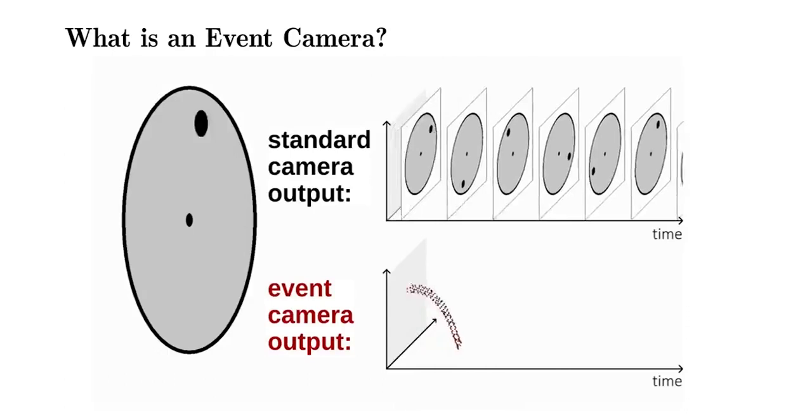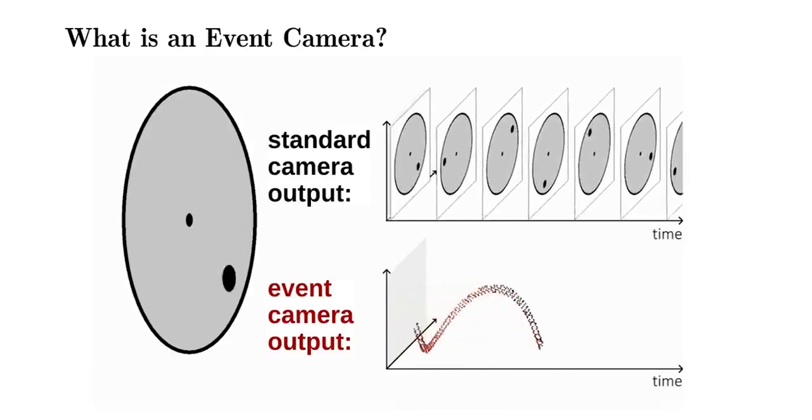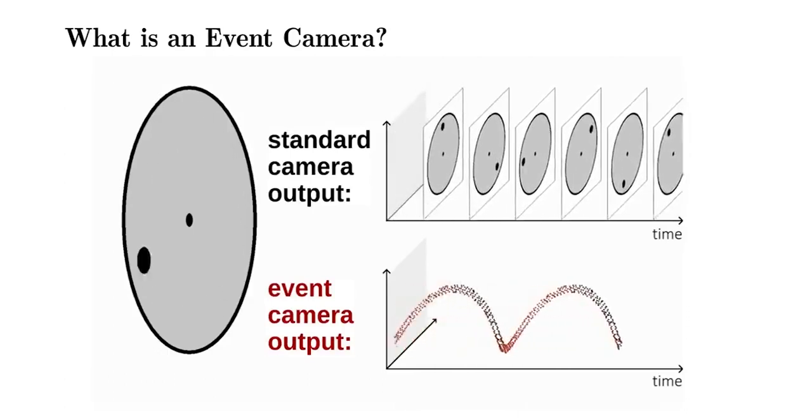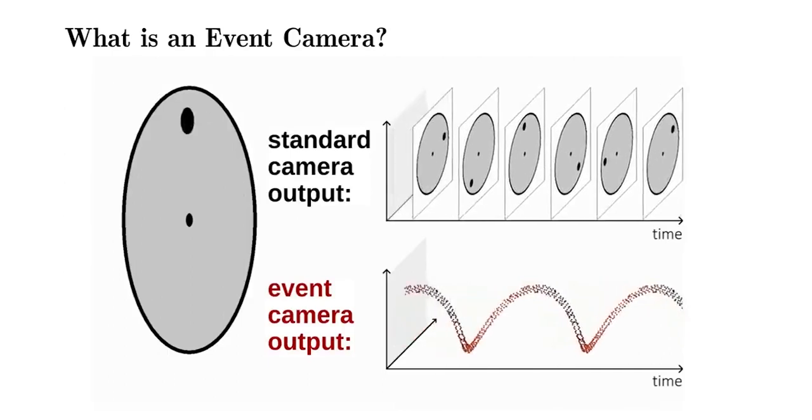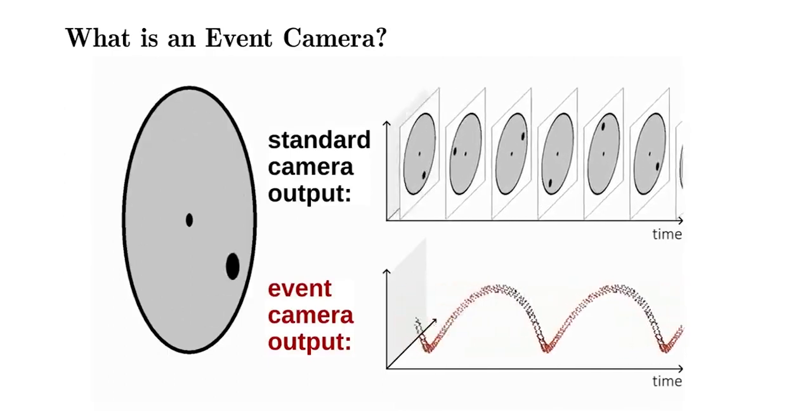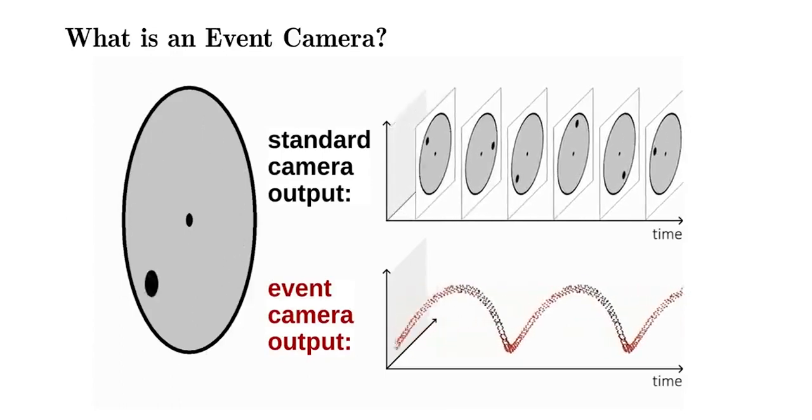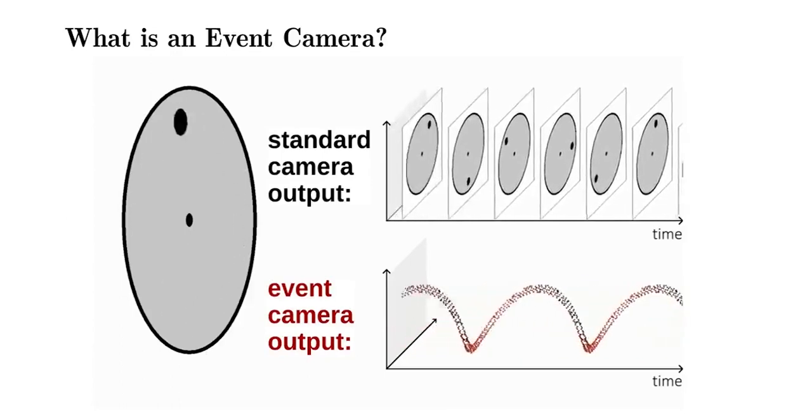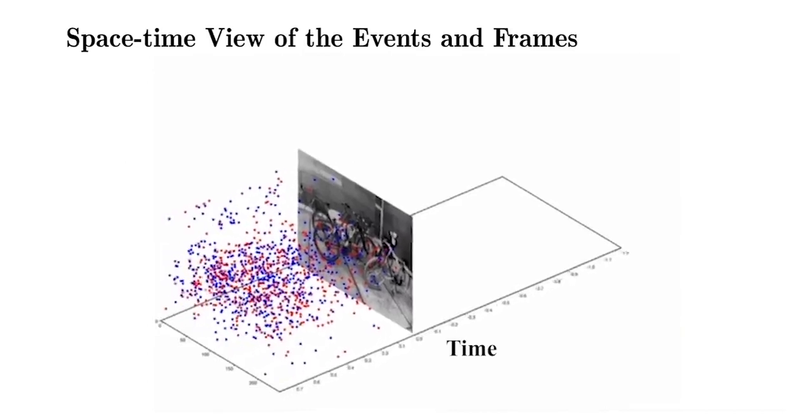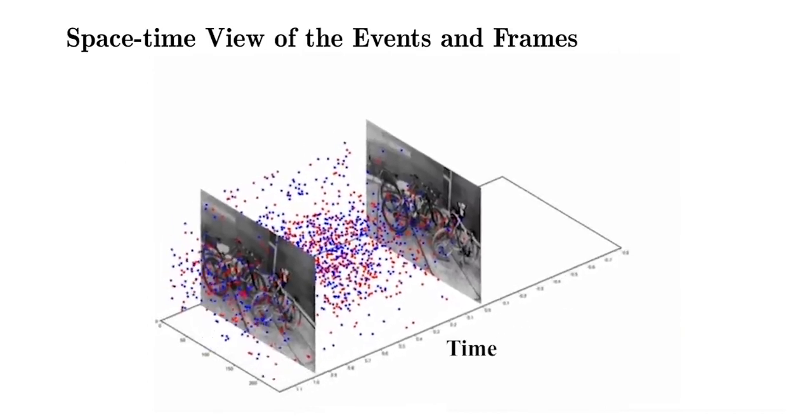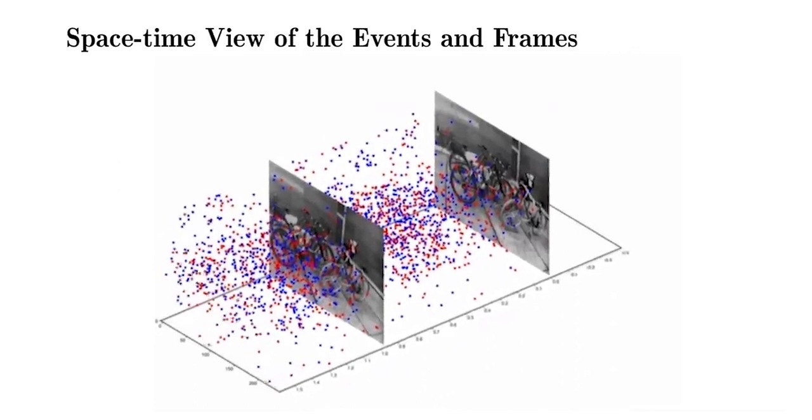Event cameras work by responding to intensity changes in the scene called events with microsecond resolution. Conversely, standard frames provide direct intensity measurements but with much higher latency. We take advantage of this complementarity and combine both sensors to perform feature tracking with low latency.